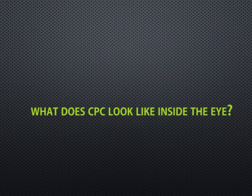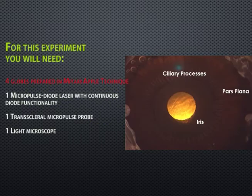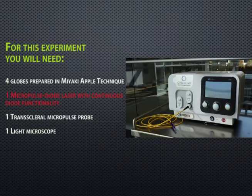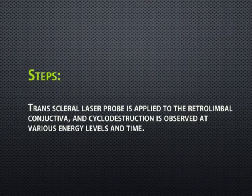Did you ever wonder what cyclo-photocoagulation looks like inside the eye, or which technique is safer — micropulse or continuous? For this experiment you need four globes prepared with a Miyake-Apple technique, one micropulse diode laser, and one transcleral micropulse probe. First, the probe is applied to the retrolimbal conjunctiva and cyclo-destruction is observed.